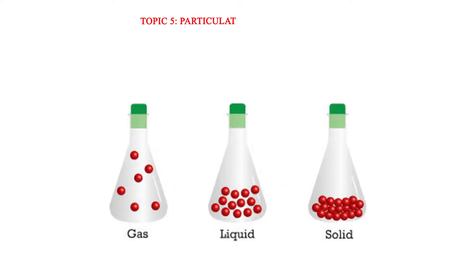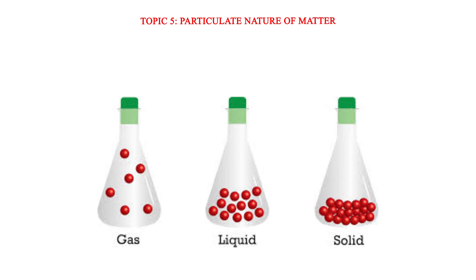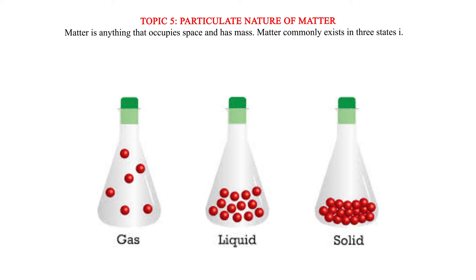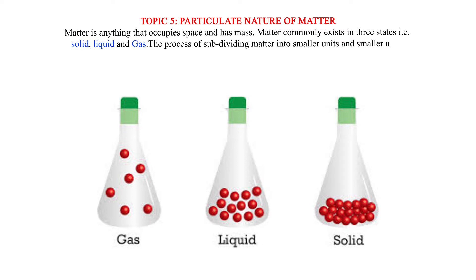Topic 5: Particulate nature of matter. Matter is anything that occupies space and has mass. Matter commonly exists in three states: solid, liquid, and gas. The process of subdividing matter into smaller and smaller units continues indefinitely, suggesting that matter is not continuous.